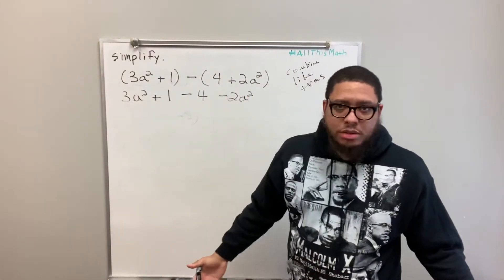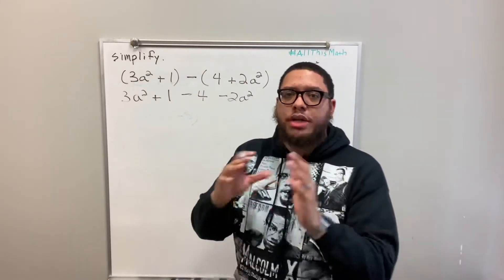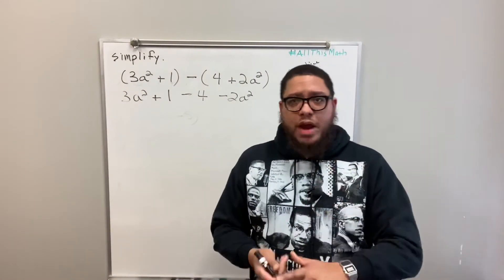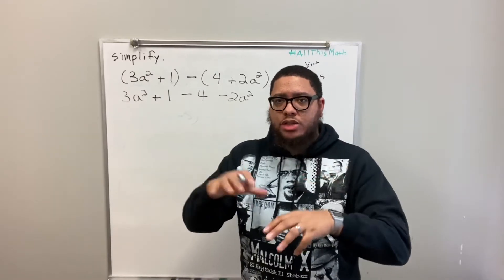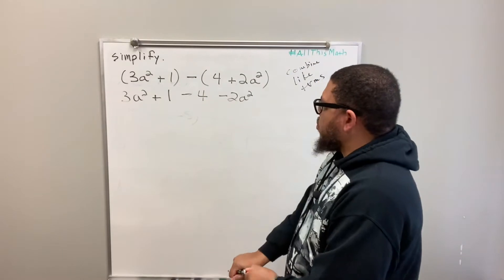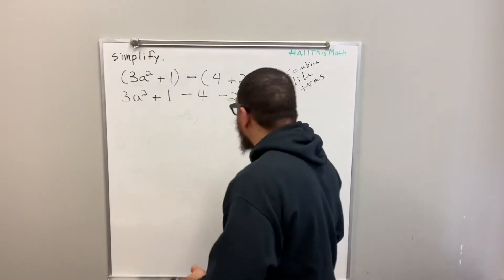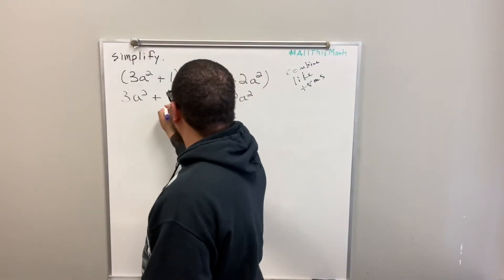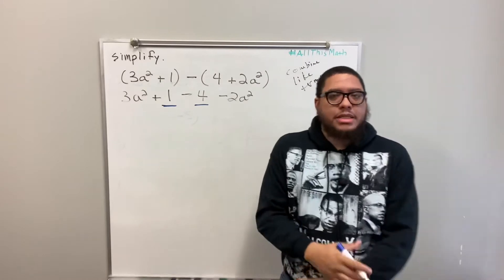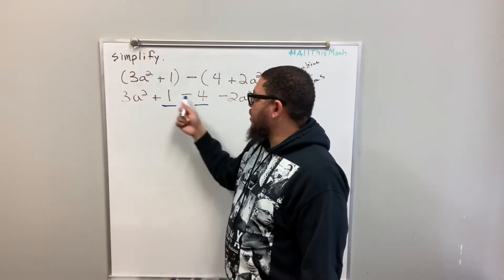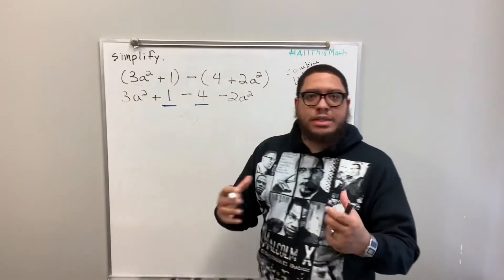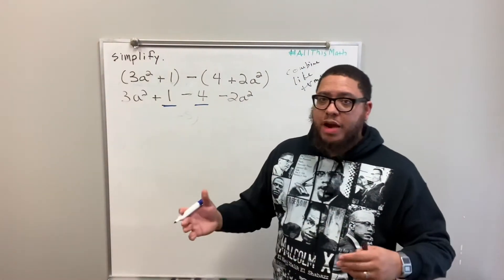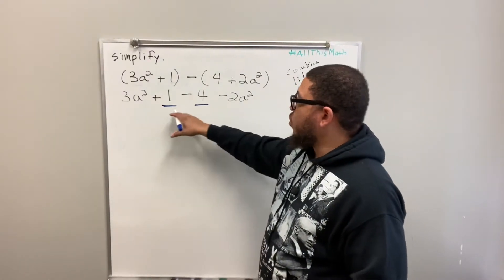Now, first of all, we need to know what are like terms. For one thing, all numbers are like terms — all regular numbers. Whether the number is positive, negative, a decimal, a fraction, or a mixed number, those are all like terms. So I want to label some of my like terms. I see a 1 and I see a negative 4. Those are like terms because they're numbers. It doesn't matter that this is positive and this is negative — they're still numbers. Fractions and decimals are like terms too. All regular numbers, positive or negative, decimals, fractions, are all like terms.